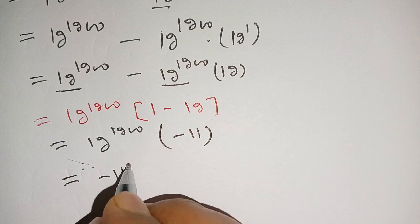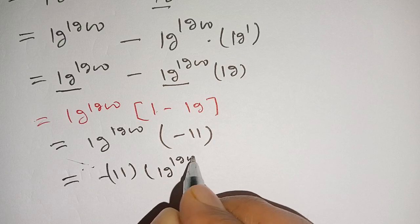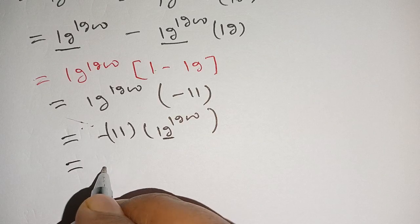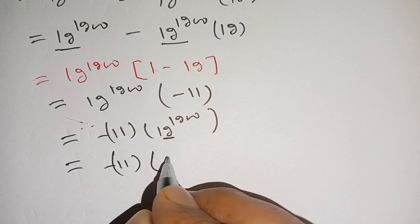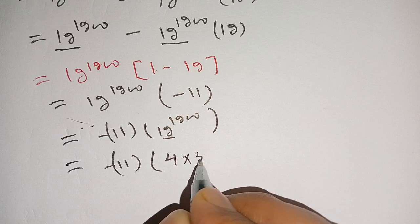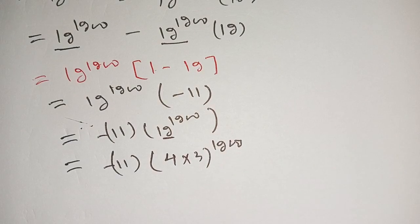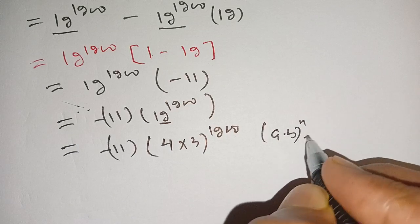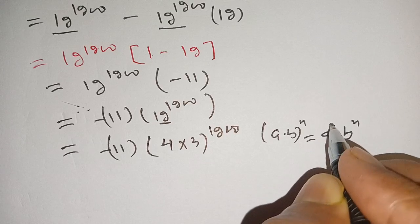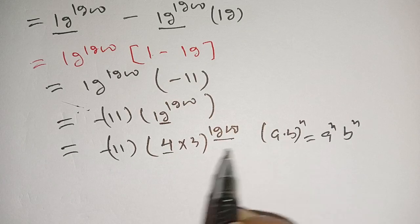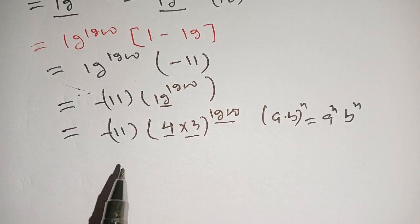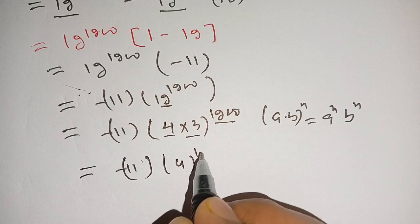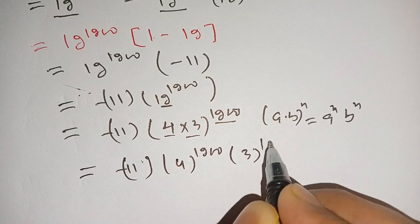When we subtract 12 from 1 we get minus 11, so the expression becomes minus 11 times 12 power 1200. Now 12 can be written as 4 times 3, so we apply the identity (a times b) power n equals a power n times b power n, with n equal to 1200, a equal to 4, and b equal to 3. This gives us minus 11 times 4 power 1200 times 3 power 1200.